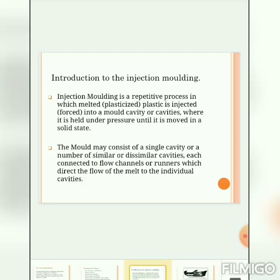The mold may consist of a single cavity or a number of similar or dissimilar cavities. Each can be connected to flow channels or runners which direct the flow of the melt material to the individual cavities.